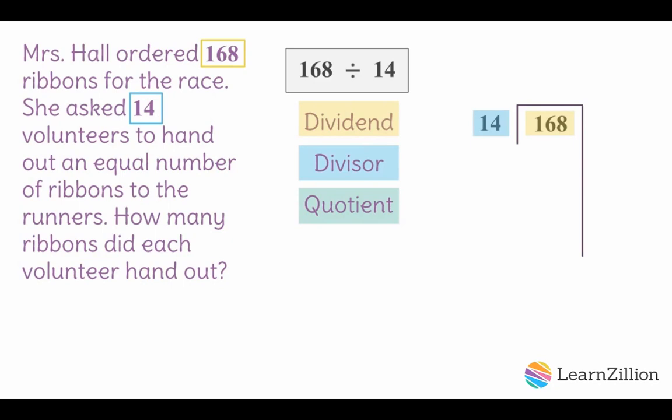Sometimes a good place to start is using multiples of 10 to help us work our way towards the dividend. I know that 10 groups of 14 equals 140. Now I subtract that from my dividend and I'm left with 28. Two groups of 14 equals 28.